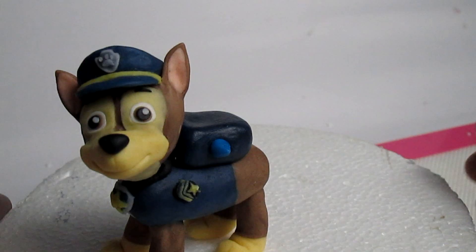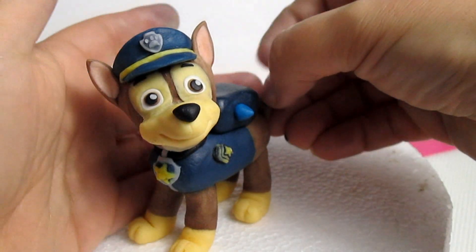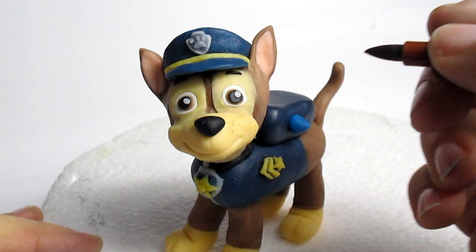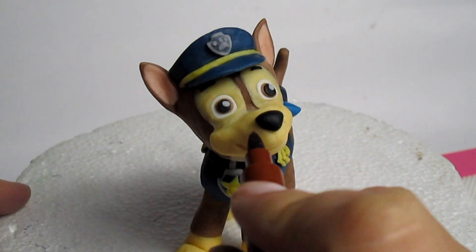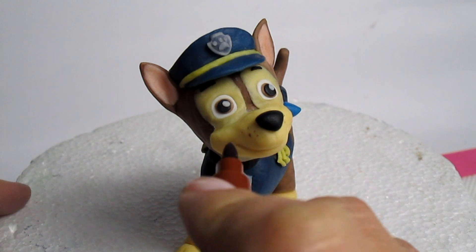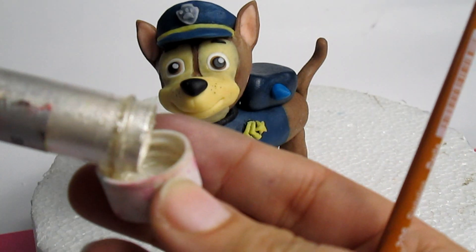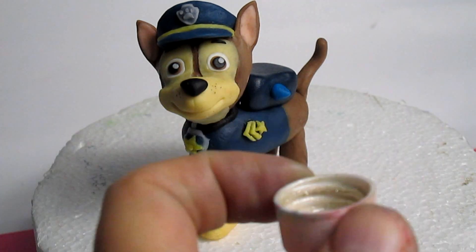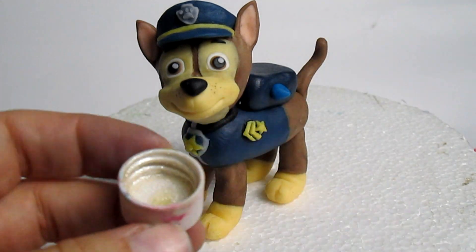With some more brown fondant, I'm adding the tail. Finally, I paint the freckles on Chase's mouth with some brown marker, and then with some silver dust and some alcohol, I paint the badges.